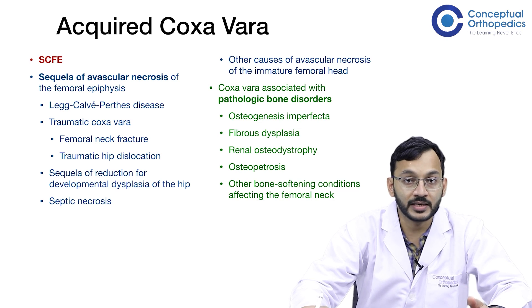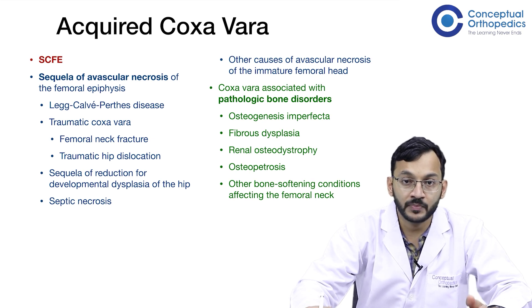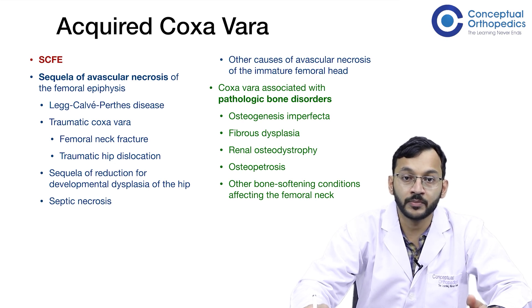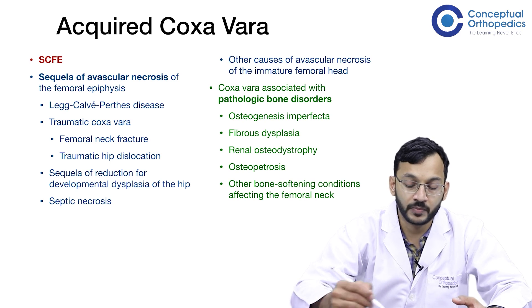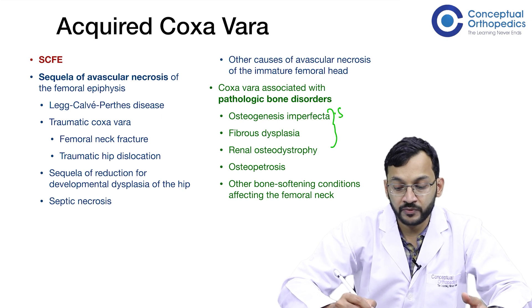Coxa vera can also be associated with pathological bone disorders like osteogenesis imperfecta, fibrous dysplasia, renal osteodystrophy, osteopetrosis, and other bone-softening conditions affecting the femoral neck. These conditions are also known to produce a Shepherd's crook deformity.